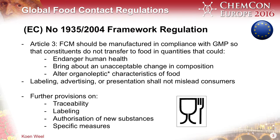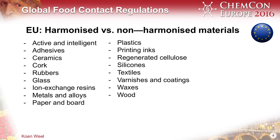This framework regulation also has provisions on traceability, labeling, and how you can authorize new substances to the system. It defines how the union works with specific measures — so specific regulations on types of materials. In fact, there is an annex in this framework regulation that defines the 17 material types that you see on the screen right now.